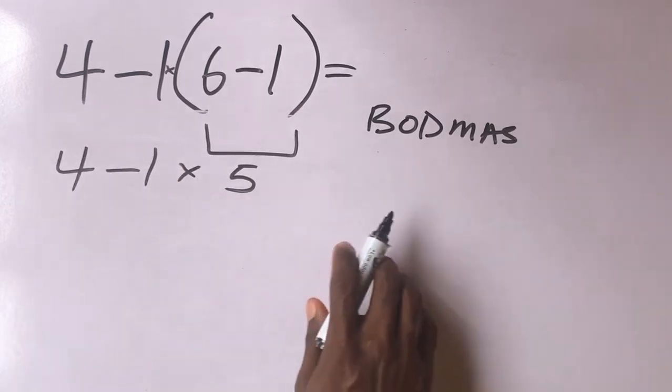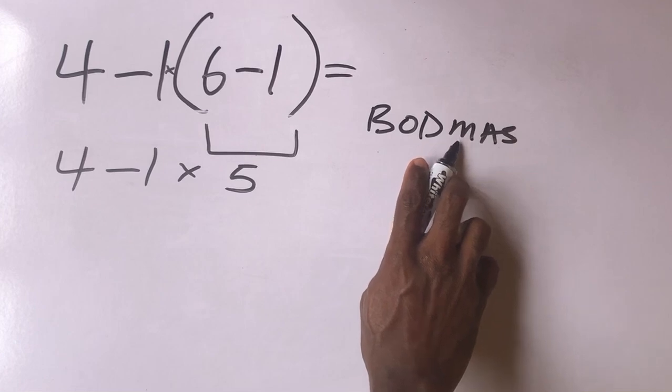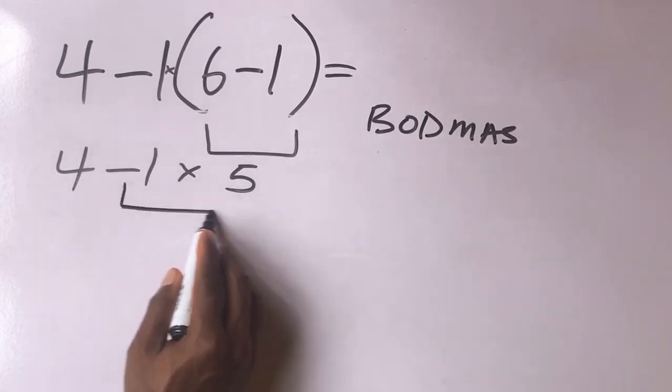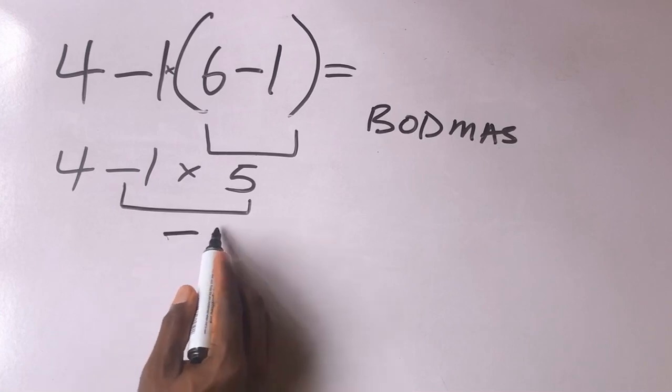So now what are we going to do first? We have to solve the multiplication. Minus 1 times 5 will give us what? Minus 5.